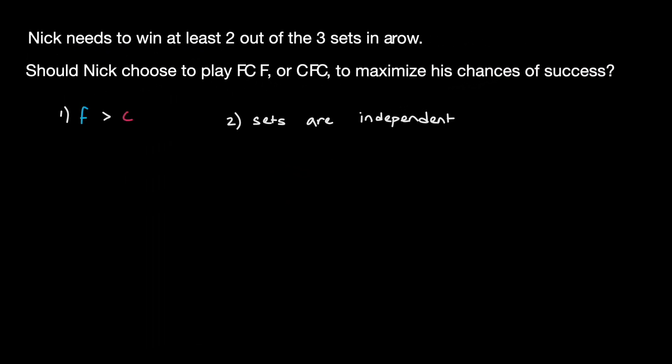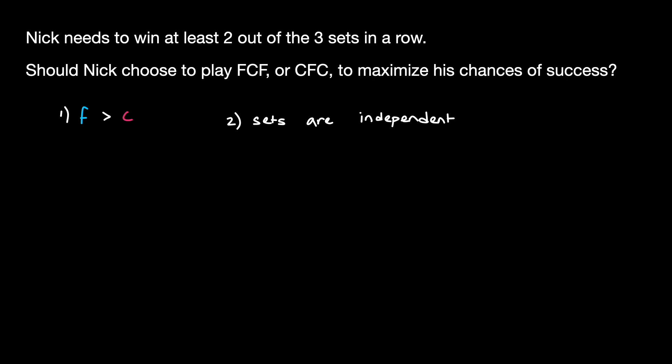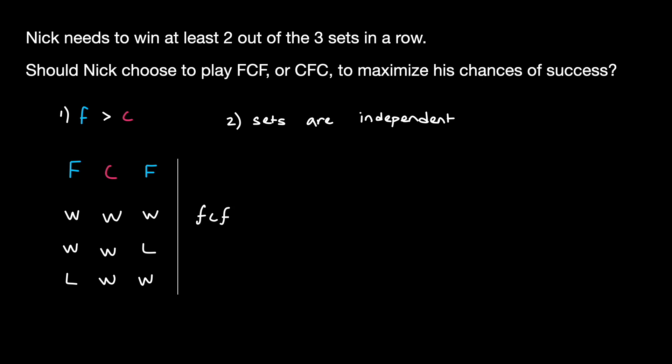Let's extract out the most important information and see where we can go from here. Let's start by enumerating out the ways in which Nick can win in both situations. In the friend-champion-friend situation, Nick wins if he wins all three sets, the first two sets, or the last two sets. We can write out the probabilities of all of these events occurring. Since the sets are independent, the probability of any individual scenario is simply the product of winning each individual set. Since winning and losing are the only two possible outcomes, the probability of losing a set is simply 1 minus the probability of winning. Therefore, the probability that Nick wins, wins, and loses against friend-champion-friend is F times C times (1 minus F). Similarly, we can write out the probability for the lose-win-win case.